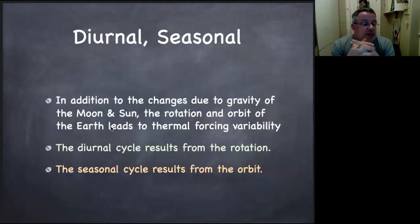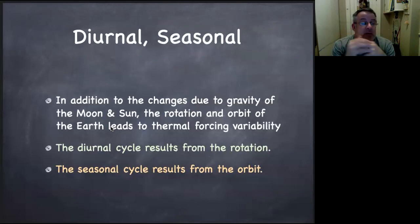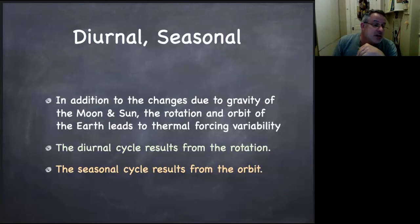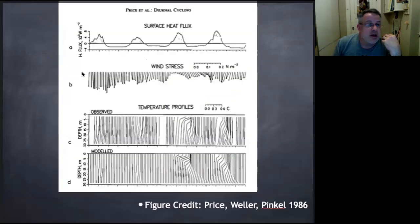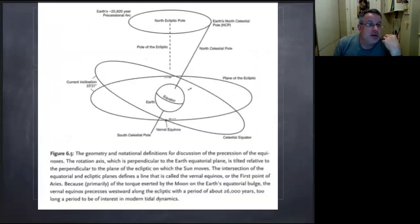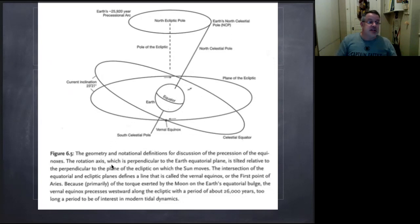In addition to changes due to gravity from the Moon and Sun, rotation of the Earth leads to thermal forcing variability from the diurnal cycle and seasonal cycle. The diurnal cycle results from the Earth's rotation; the seasonal cycle results from the Earth's orbit. So we expect thermal forcing to set off things like the mixed layer depth changing over the seasons. There's also a diurnal cycle in wind stress, surface heat flux, and temperature profiles, and the ocean responds to that. You might actually set off some kind of wave if you had a wave slow enough to respond to the seasonal cycle.